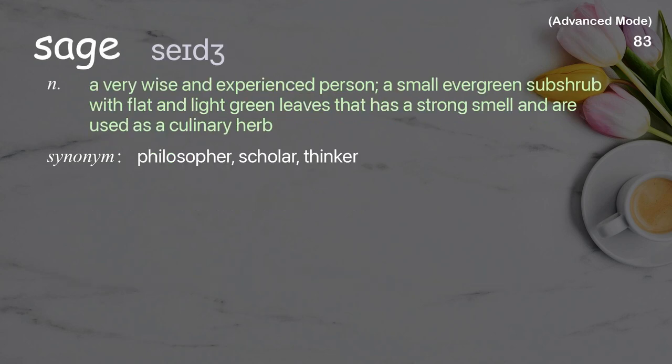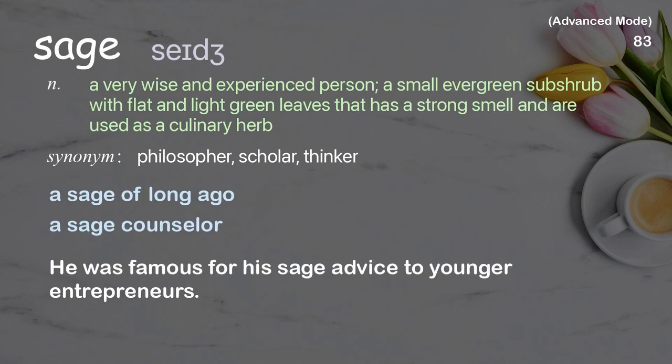Sage: a very wise and experienced person; also a small evergreen subshrub with flat, light green leaves that have a strong smell and are used as a culinary herb. Examples: a sage of long ago, a sage counselor. He was famous for his sage advice to younger entrepreneurs.